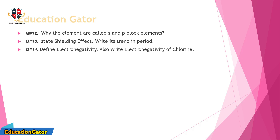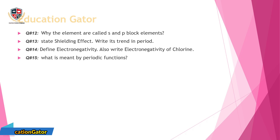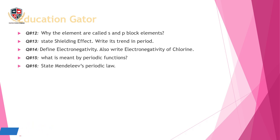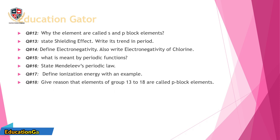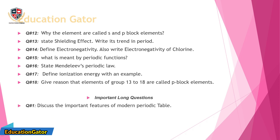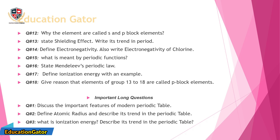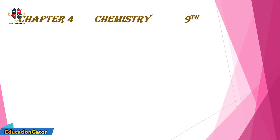Question 13: State the shielding effect and write its trend in a period. Question 14: Define electronegativity and also write the electronegativity of chlorine. Question 15: What is meant by periodic functions? Question 16: State Mendeleev's periodic law. Question 17: Define ionization energy with an example. Question 18: Give the reason that elements of group 13 to 18 are called P block elements.